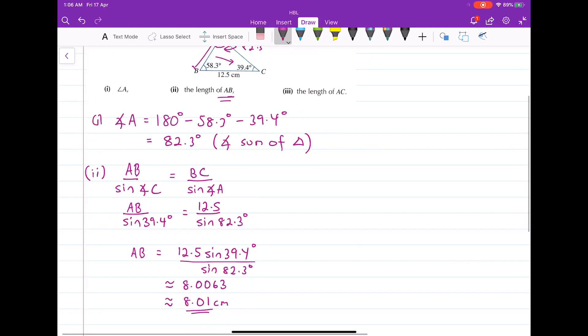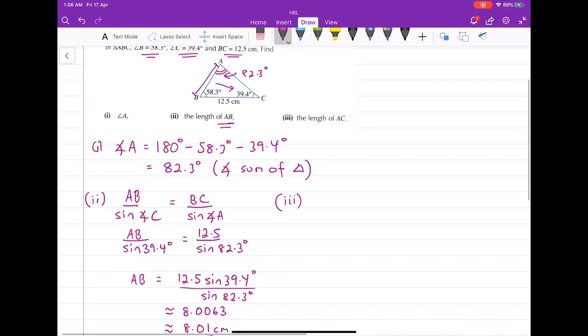So let's do part three. We're supposed to find the length of AC. Okay. Having a look at the diagram again, the length of AC over the sine of angle B is equal to BC again over the sine of angle A.